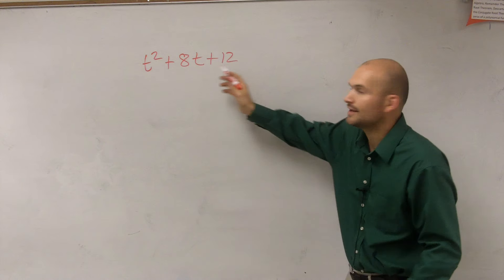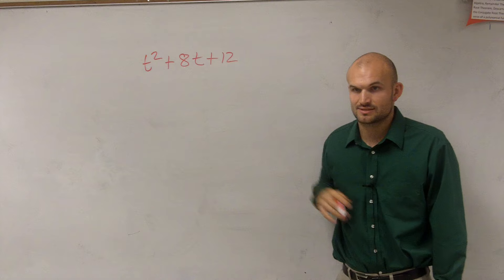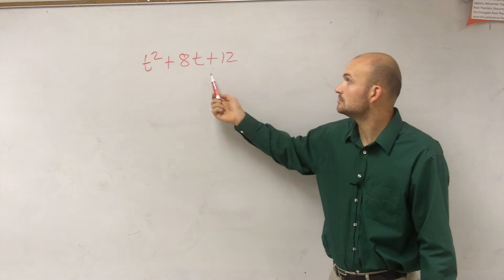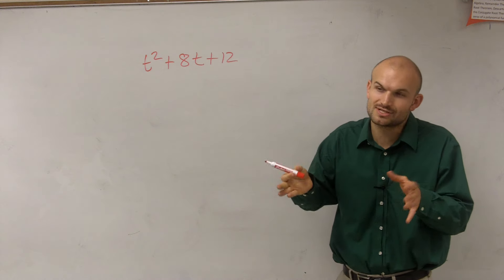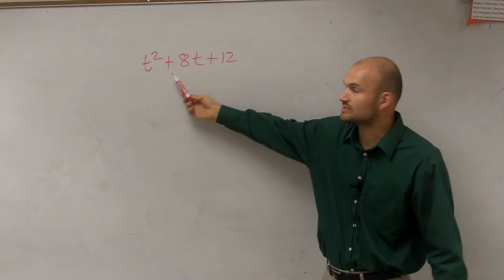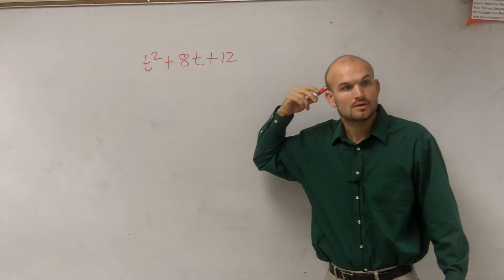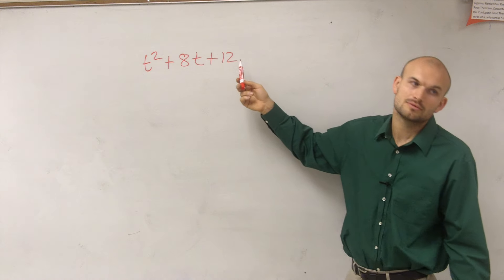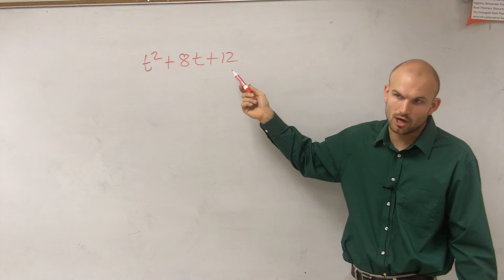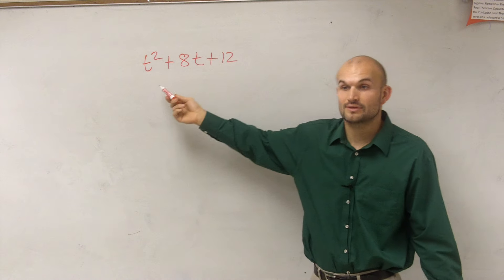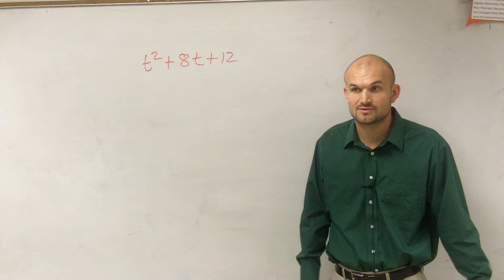So we look at this and we say, what goes into all of these? And you might say, well, one. What goes into besides one? Two, four. Well, we get stuck with t, though, because the 12. Nothing, right? They don't have a GCF that we can factor out.